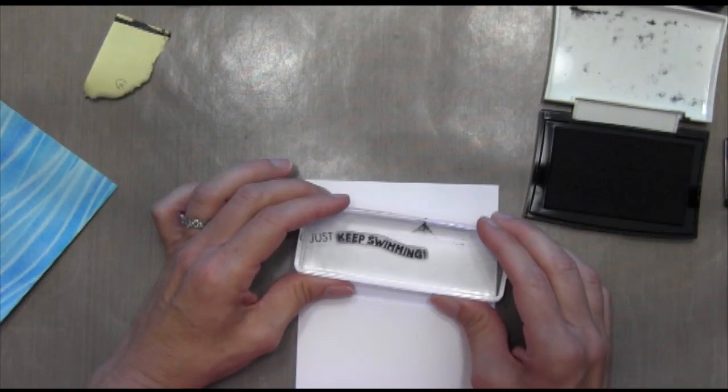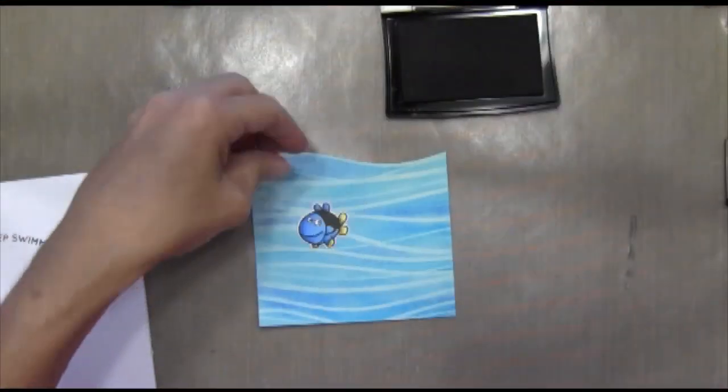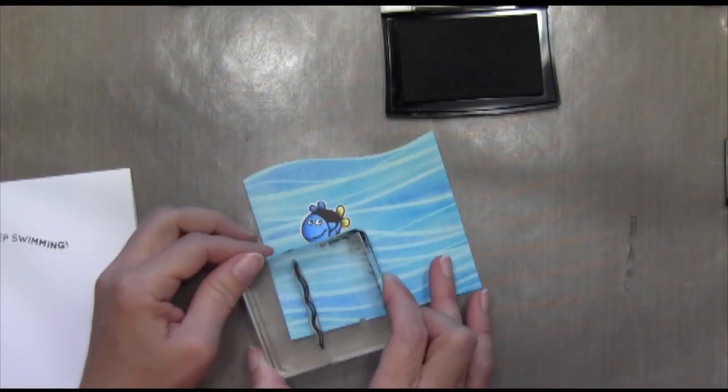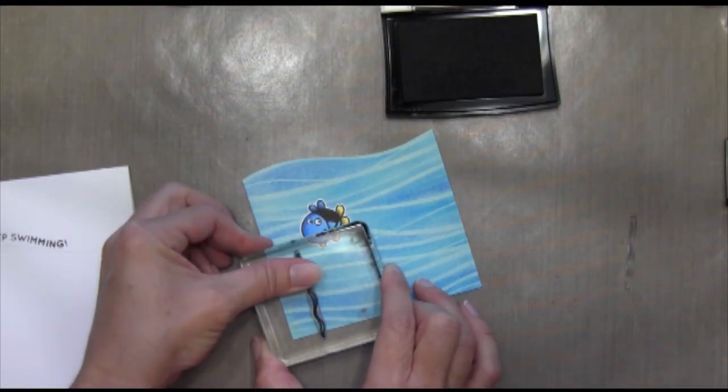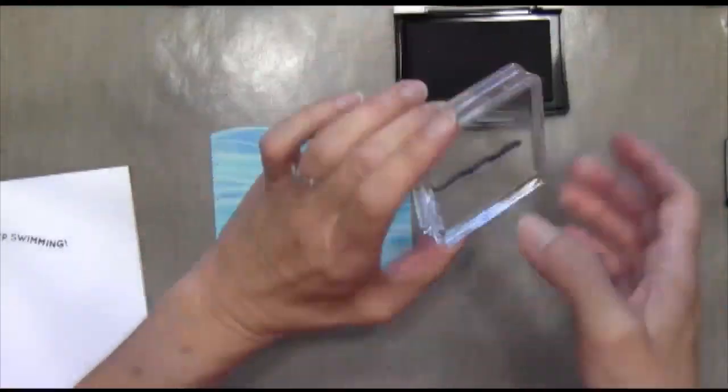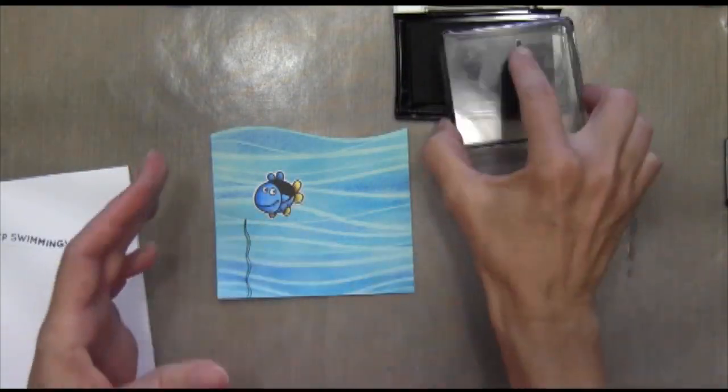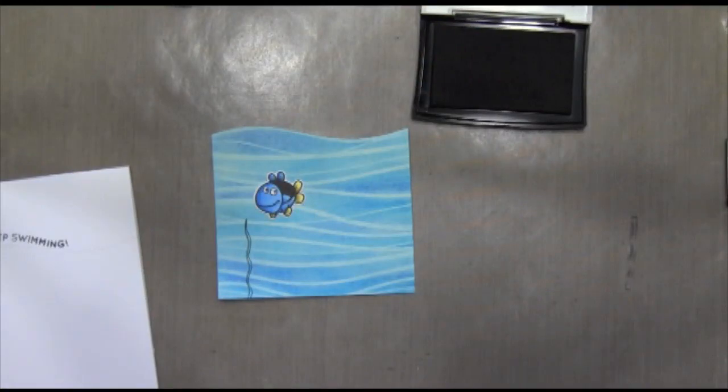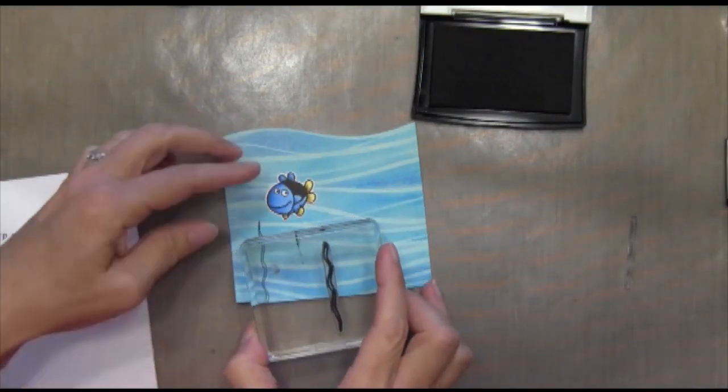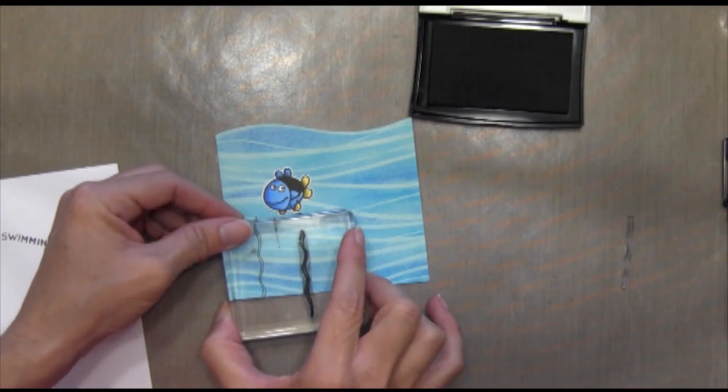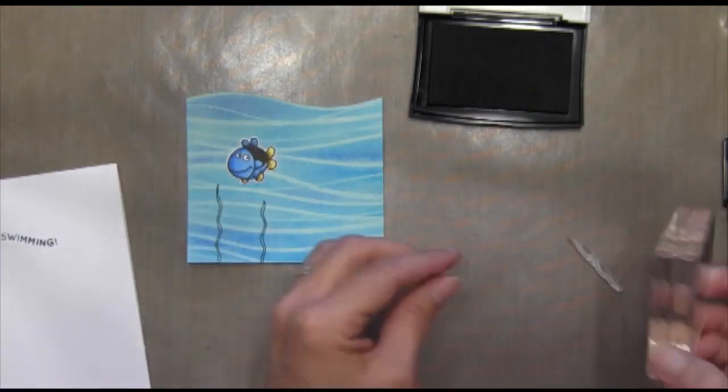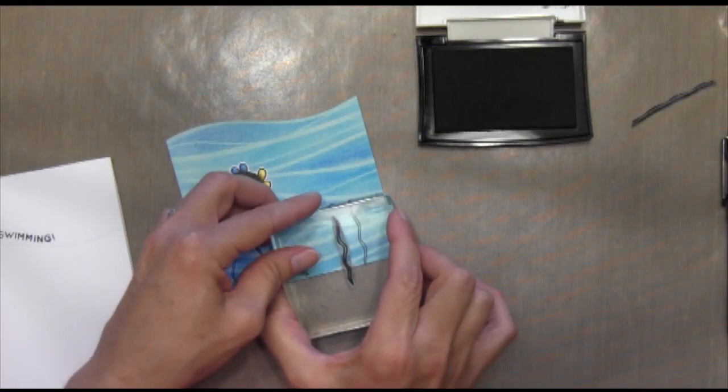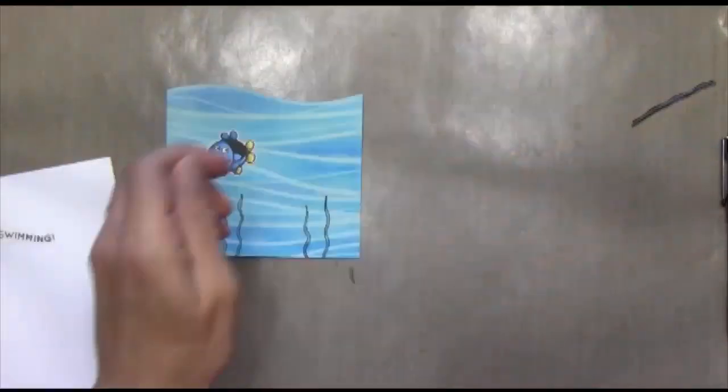But that's the great thing about these clear stamps is that you can move them around and adjust them. Now this kelp, I guess this is kelp. I think it's kelp. It comes with the Best Fishes set. So there's three different shapes and I'm taking two of them and I'm just kind of flipping them around here and there and stamping them down there at the bottom.